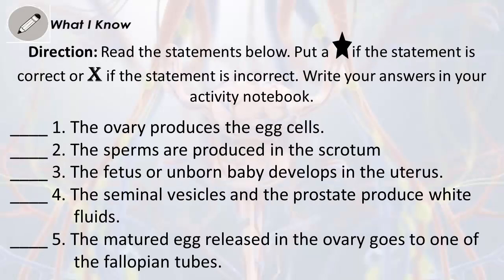Direction: Read the statements below. Put a star if the statement is correct, or X if the statement is incorrect. Write your answers in your activity notebook. 1. The ovary produces the egg cells. 2. The sperms are produced in the scrotum. 3. The fetus or unborn baby develops in the uterus. 4. The seminal vesicles and the prostate produce white fluids. 5. The matured egg released in the ovary goes to one of the fallopian tubes.